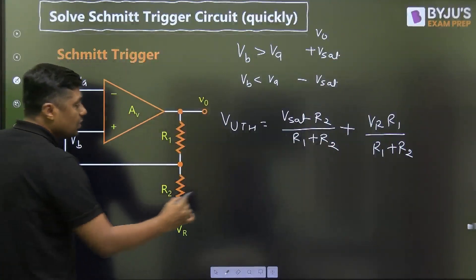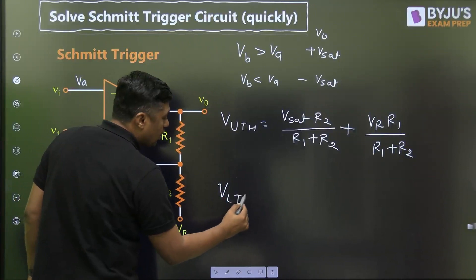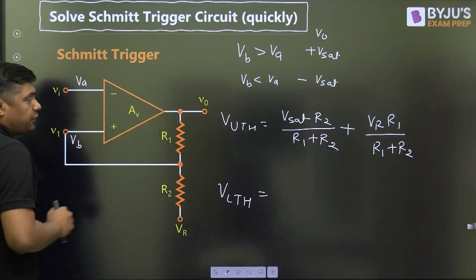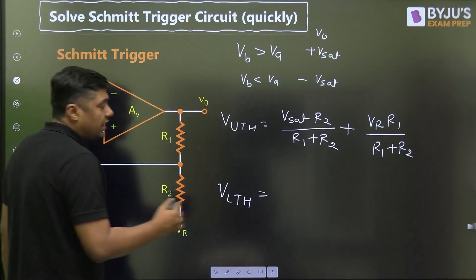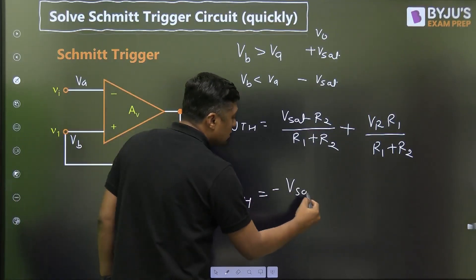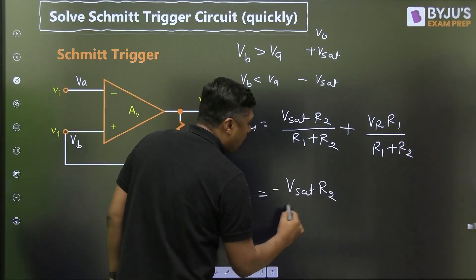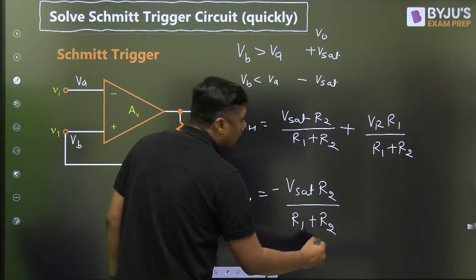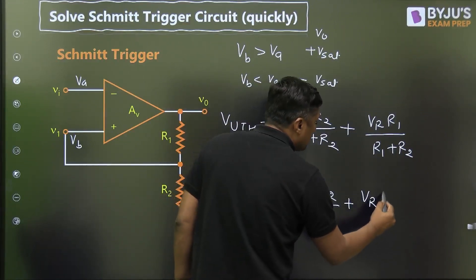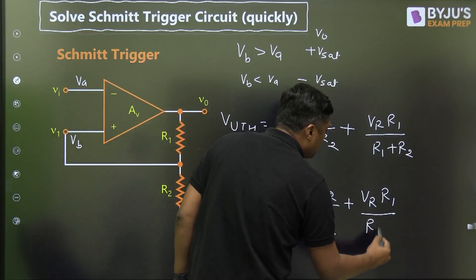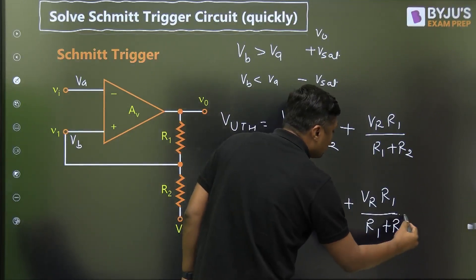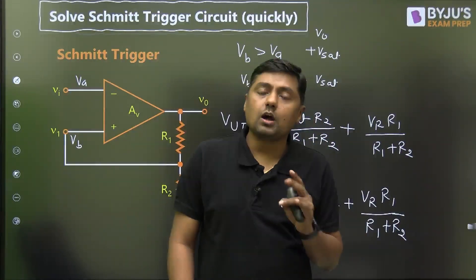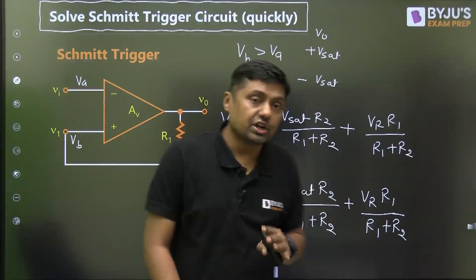Second, V-LTH — what is the lower threshold voltage? For a negative value of V0, that is minus V-sat, it equals minus V-sat multiplied by R2 divided by R1 plus R2, plus VR multiplied by R1 divided by R1 plus R2. Now this is a very important factor: upper threshold and lower threshold.